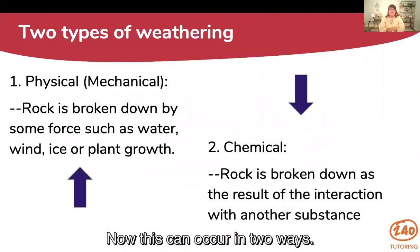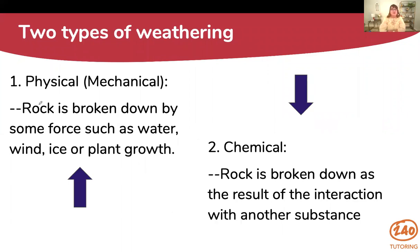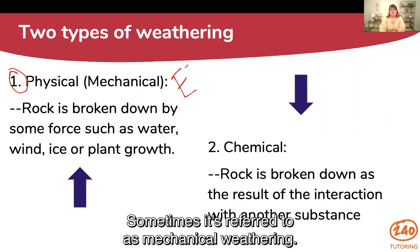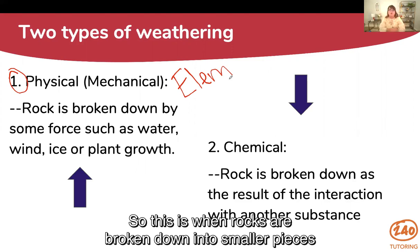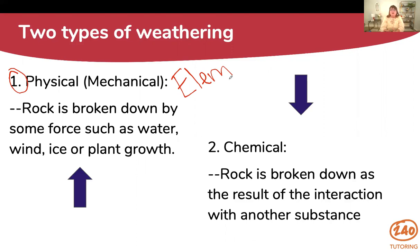This can occur in two ways. The first way is physical weathering, sometimes referred to as mechanical weathering. This is what we typically teach in elementary school. This is when rocks are broken down into smaller pieces by some force, such as water, wind, ice, or plant growth.